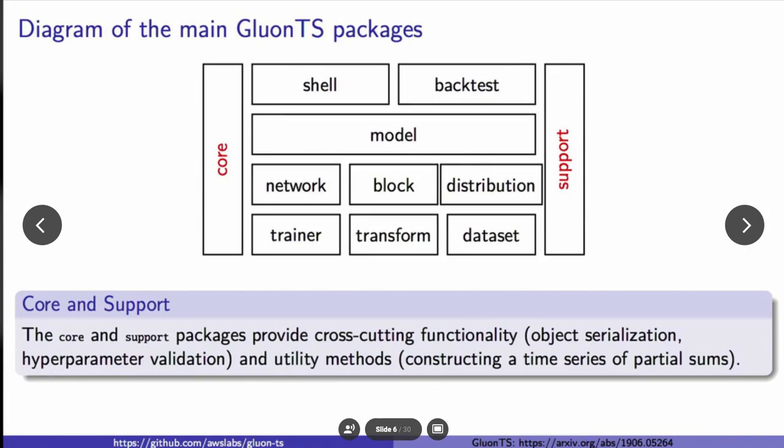Here we have a diagram of the main GluonTS packages. I'm going to highlight a couple of these. First, we have core and support packages, which provide functionality for object serialization and hyperparameter validation, as well as utility methods to construct a time series of partial sums. We also have a shell package. If you use the shell package, this lets you interface with Amazon SageMaker, so you can run training more efficiently. Although GluonTS will run on your laptop as well in Python.